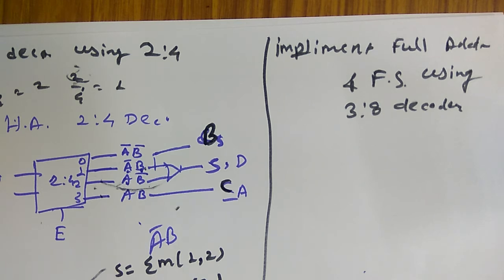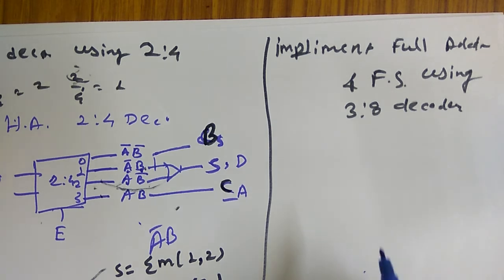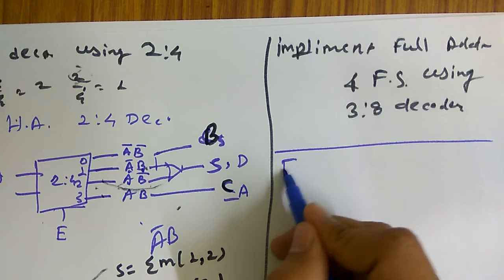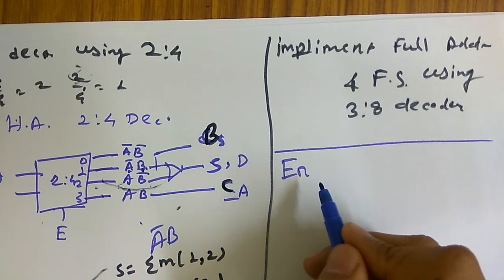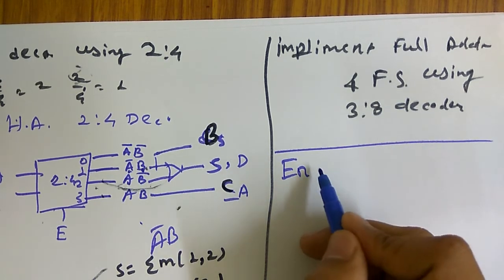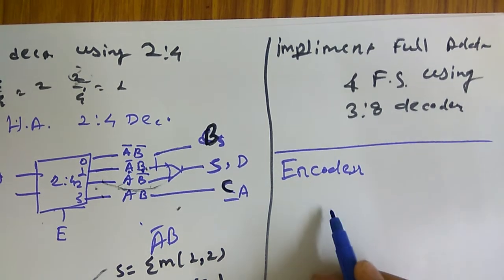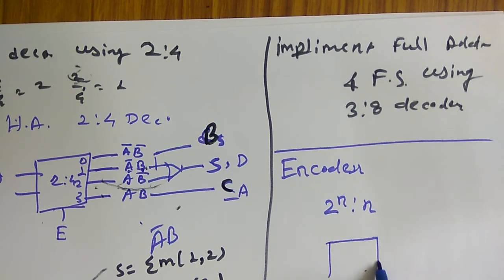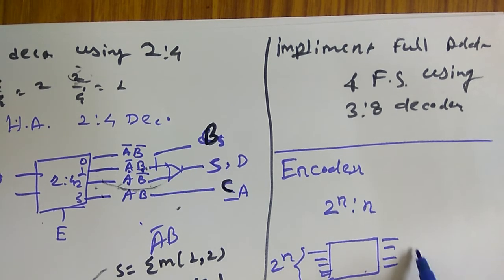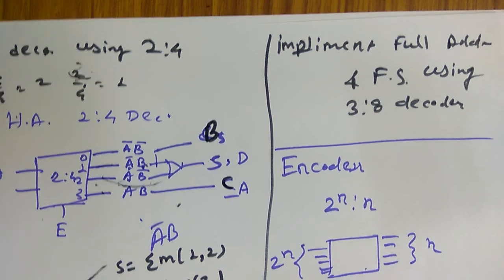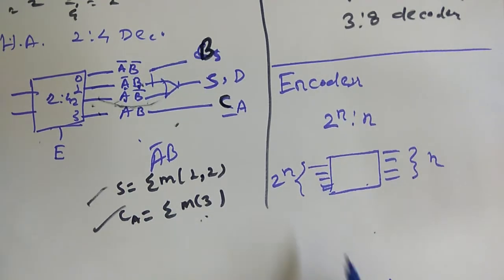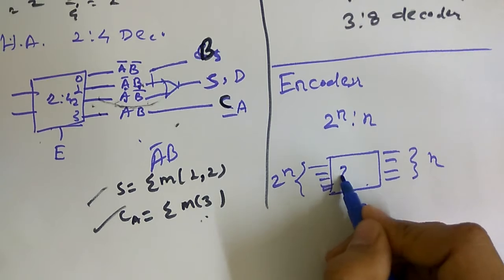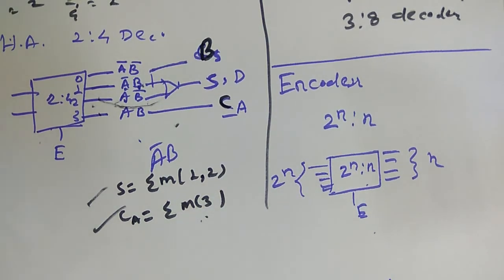The last topic is encoder. Encoder is nothing but the complement of decoder. In a decoder we have n inputs and 2 to the power n outputs. In an encoder we have 2 to the power n inputs and n outputs. There is also one enable input similar to what we have seen in the decoder.